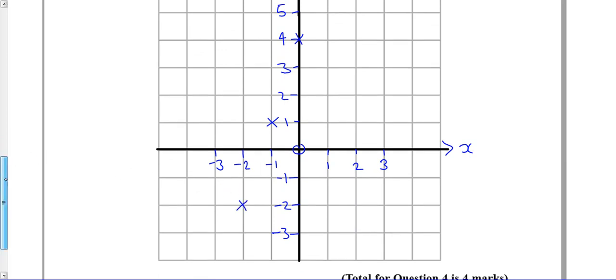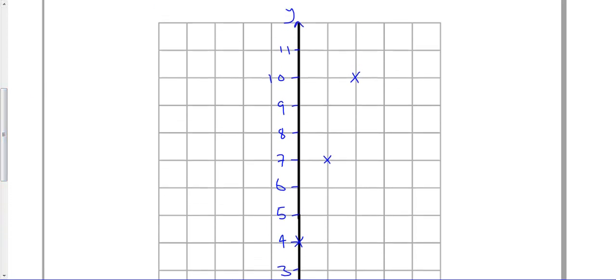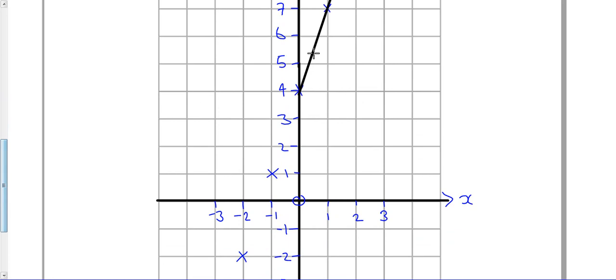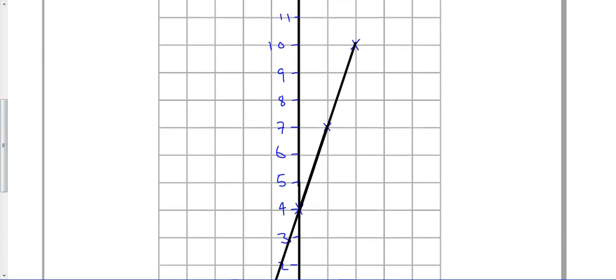And -2 goes with -2. So I've now plotted all my coordinates. And now I have to join these up really accurately. So let's get the pen, let's get the straight line. I need to join these first ones up. And then if I carry on down, hopefully if I've been really accurate. And what we've got is the line y equals 3x plus 4.